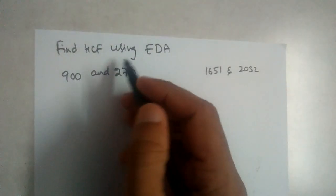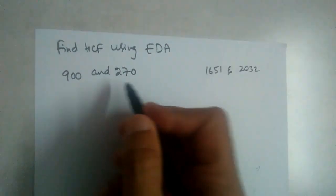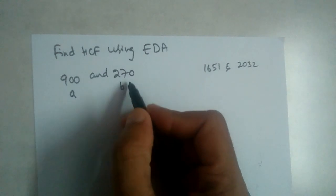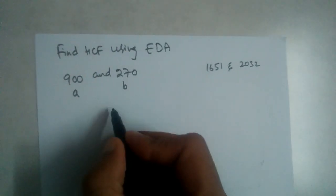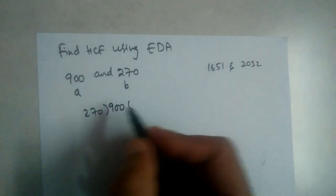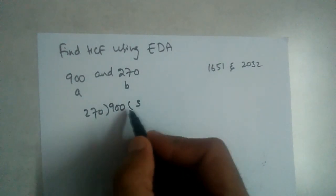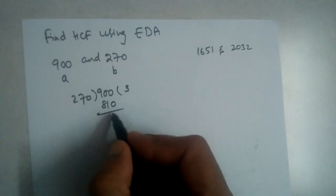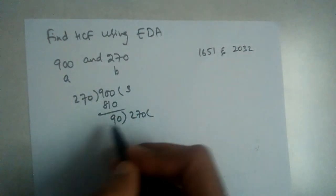Find HCF using Euclid's division algorithm for 900 and 270. Here a should be 900, the bigger number, and b should be 270, the smaller number. So 900 divided by 270. 27 threes will be 81, so this will be 810. If you subtract, you'll have 90. So 270 again should be divided by 90.